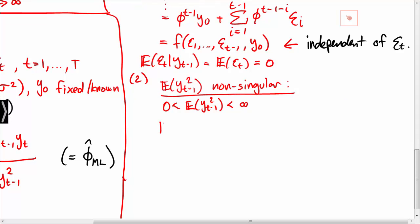But recall here that the mean of yt minus 1 squared is sigma squared divided by 1 minus phi squared if phi has absolute value less than 1. This we have assumed.